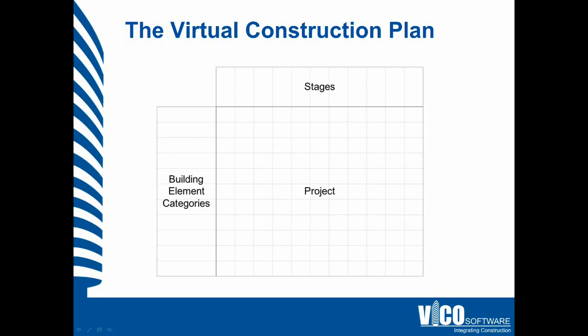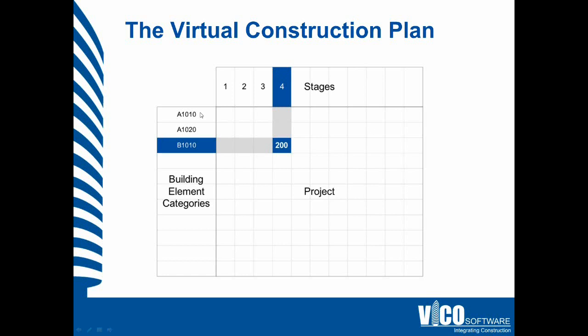Then across the top, we have the stages at which we want to release a version of the building information model. In this example we've got just three building element categories. We follow the UniFormat classification structure, but it could be any classification structure you'd like to use. The number of stages could be the number of meetings or decision moments set up for your project, and at each intersection you define a targeted level of detail.